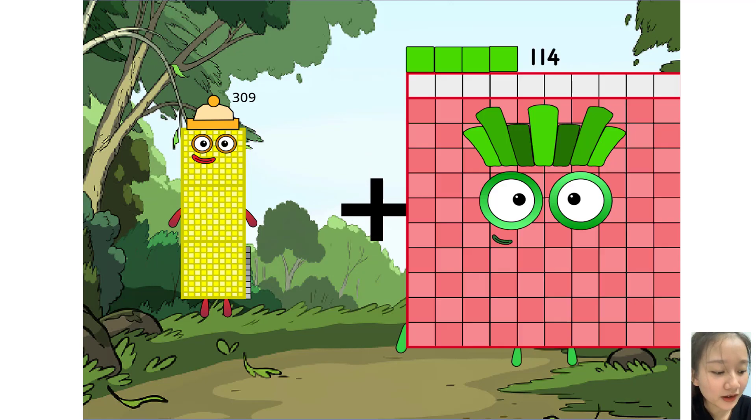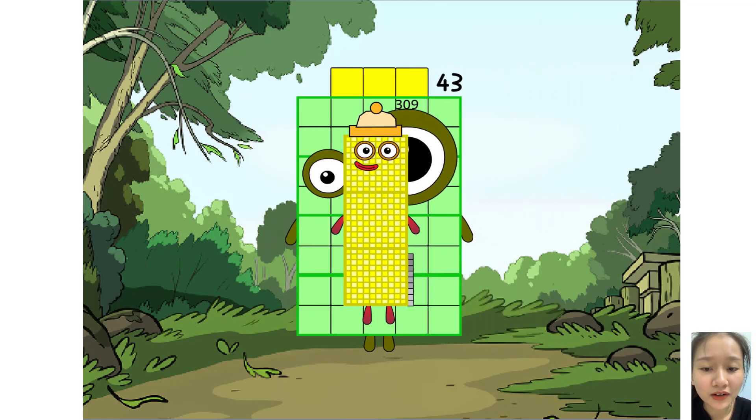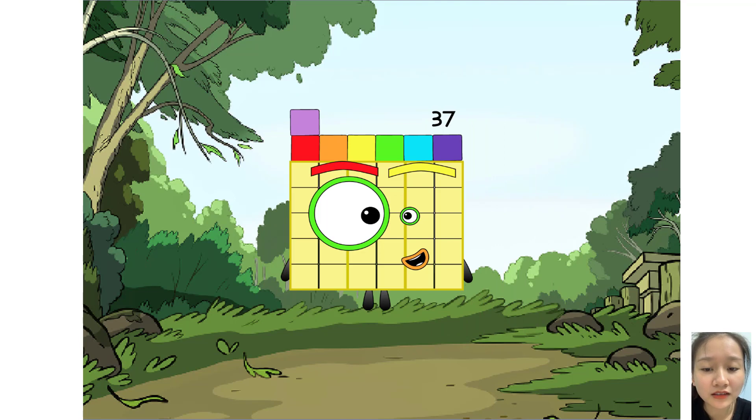309 plus 43 equals 37. Oh, you are so good. Your mind is so quick to do this math.